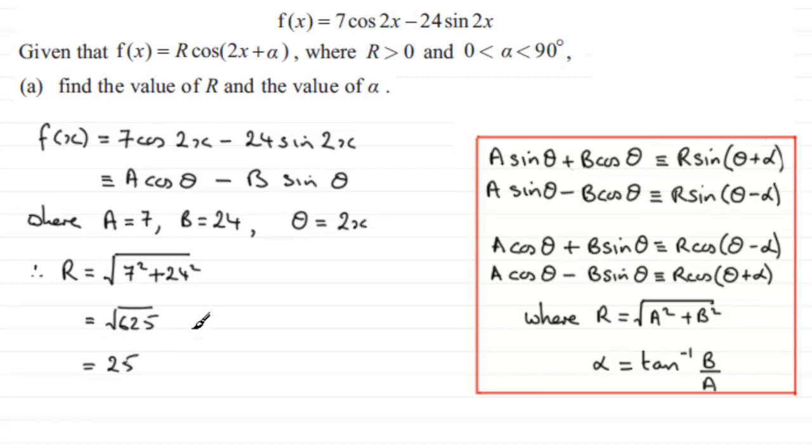When it comes to working out what alpha is, let's just come down here: alpha equals the inverse tan of b over a, so in other words the inverse tan of 24 over 7. We're working in degrees for this, so make sure your calculator is in degrees mode. If you do that, you'll find you get 73.739 and so on, which if we give, say, three significant figures, that's going to be 73.7 degrees to three significant figures.